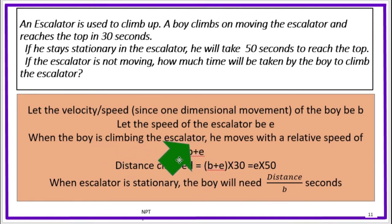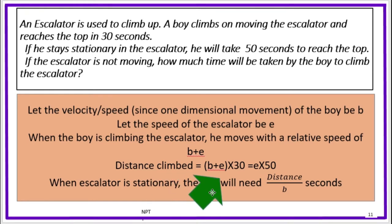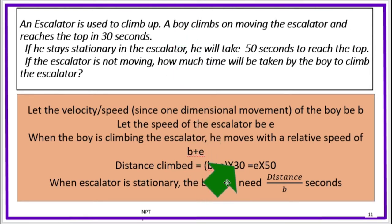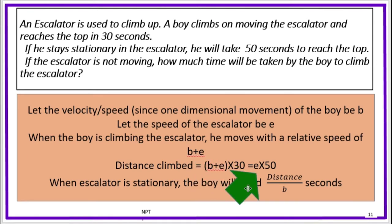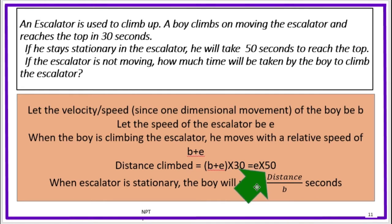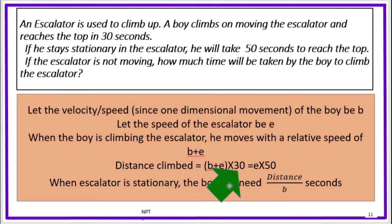The distance climbed is (b plus e) into 30 seconds when the escalator is moving with the boy climbing. The escalator alone covers the same distance in 50 seconds. So the distance equals e into 50, which equals (b plus e) into 30. This gives us the relationship between the escalator speed e and the boy's speed b.